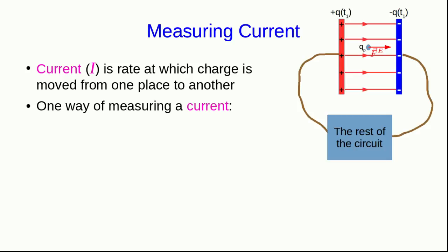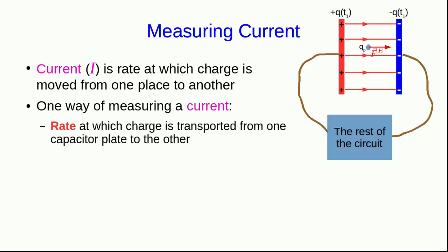Imagine we have a pair of capacitor plates and we put a probe charge in between so that we can measure the force on that probe charge. And remember that the current is the rate at which charge is going to be transported from one capacitor plate to the other.